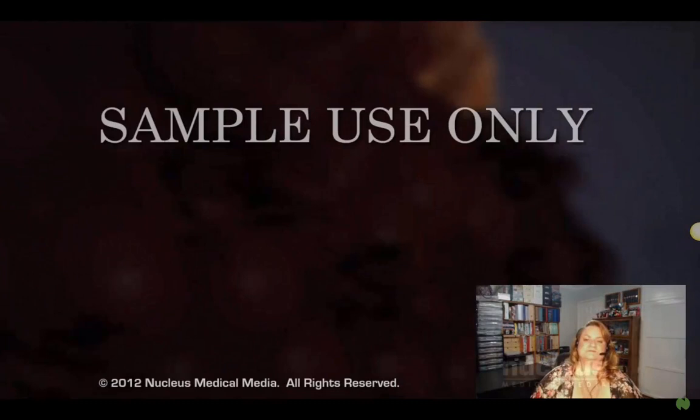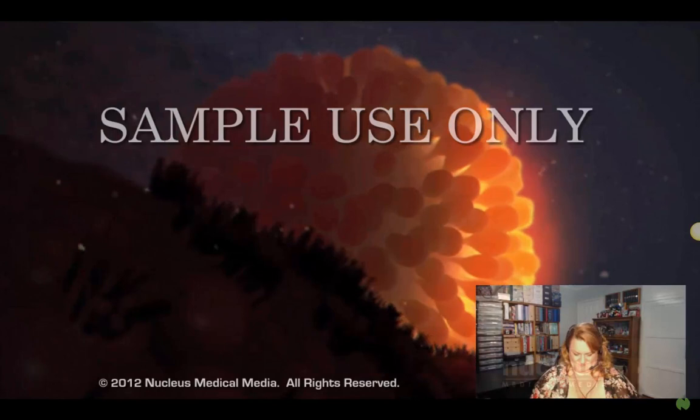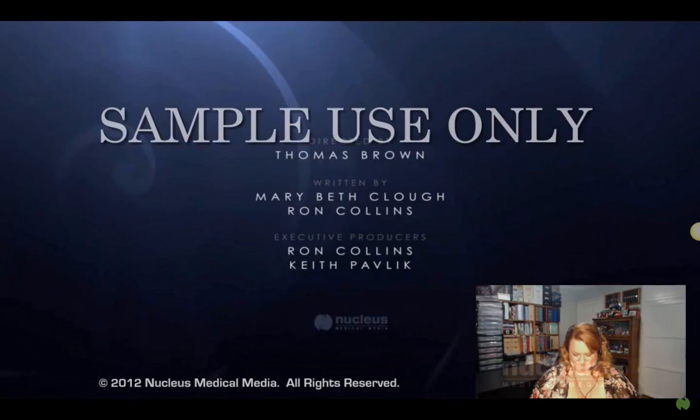This new single cell — the zygote — is the beginning of a new human being. The cilia in the fallopian tube gently sweep the zygote toward the uterus, where it will implant in the rich uterine lining, growing and maturing for the next nine months until ready for birth.